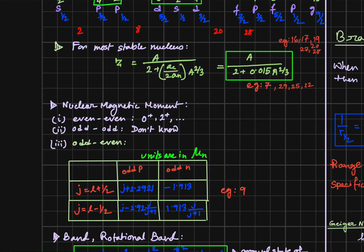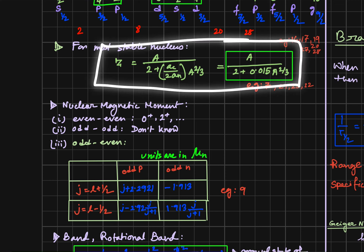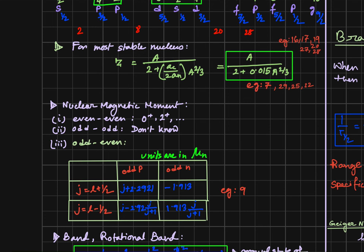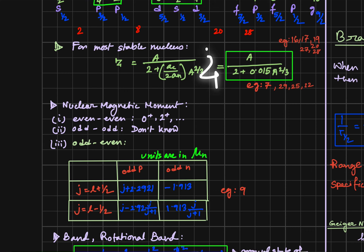This is another important formula — the most stable nucleus for a particular mass number A. The formula is Z = A / (2 + 0.015 × A^(2/3)). A lot of questions can also be covered by this formula alone.